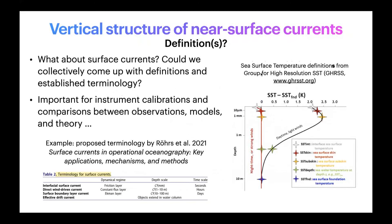Do we have a definition? We don't. And could we collectively come up with definitions and establish terminology? We discussed that to a large extent during the workshop. It is actually very important for instrument calibration, comparison between various observations, comparison between model and observations, as well as theory comparisons. Some authors such as Ross et al. have come up with different terminology about surface currents that relates various names to various dynamical regimes, depth scales, and time scales — effectively taking into account that vertical structure.